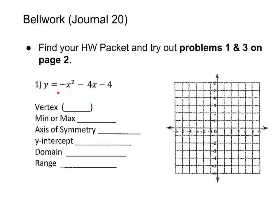This equation is a quadratic because the highest power is two, so I'm going to have to graph a parabola. This one is in standard form — standard form has no parentheses and has a coefficient in front of x squared, in front of x to the first power, and then a constant. So a, b, and c are just coefficients. Here a is negative one, b is negative four, and c is negative four.